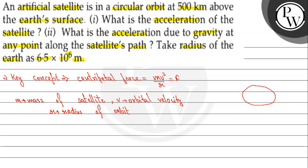Now consider a diagram — here we have the Earth, and around it a satellite is revolving in a circular orbit. The height from the surface of Earth is H. If we consider the Earth's radius as capital R, then the radius of orbit, small r, will be equal to R plus H.